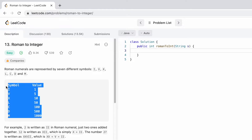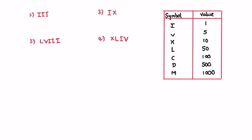Before coding it up, let's walk through a few examples to see how this conversion works. We'll start by creating a map where the key is going to be the symbol and the value is going to be the integer value for that symbol. The main concept is that we iterate from left to right, and the greatest symbol should appear first before symbols with a lower value. If symbols appear in descending order, we can directly add the values.